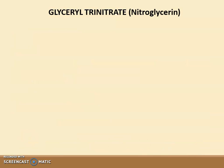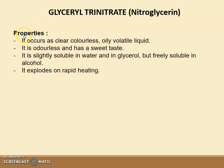Let's start with individual monograph. The first drug is glyceryl trinitrate, which is also called nitroglycerin. Properties: it occurs as a clear, colorless, oily, volatile liquid. It is odorless and has a sweet taste. It is slightly soluble in water and in glycerol but freely soluble in alcohol. It explodes on rapid heating.